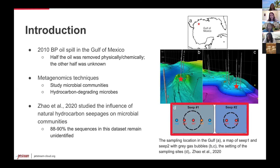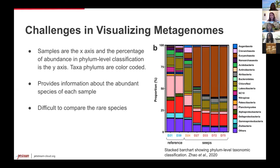This data set consists of seven samples: five from natural seep sites and two reference sites. Additionally, 88 to 90 percent of the sequences in the data set remain unidentified per sample, regardless of the level of classification, which makes this a novel data set interesting to explore. Zhao et al. represent the majority of their data using bar charts, which captures the complexity of the microbial community.